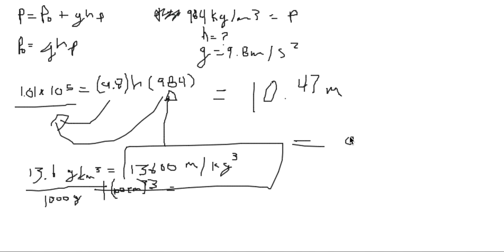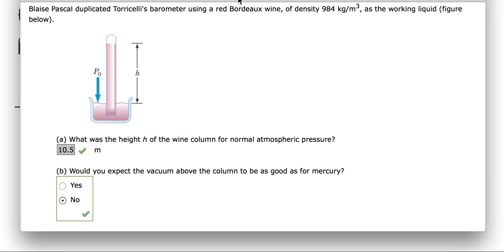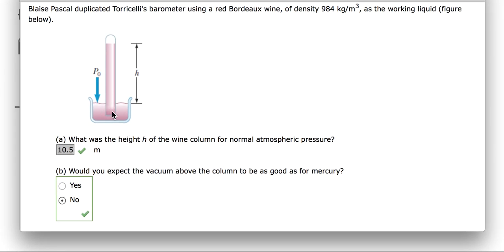0.76 meters is much less than 10.47 meters. This means the vacuum would not work as well, because the mercury would only go up this high versus all the way up to 10 meters.